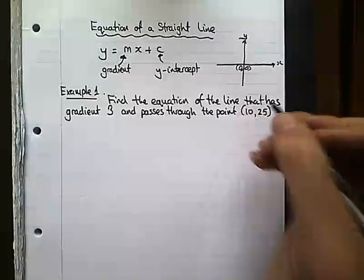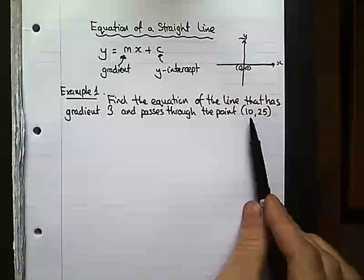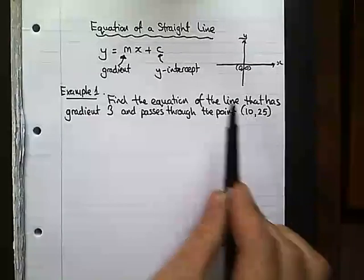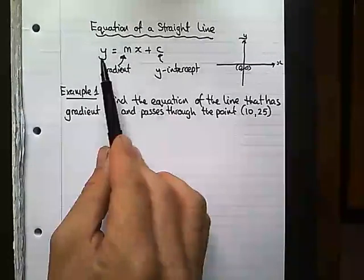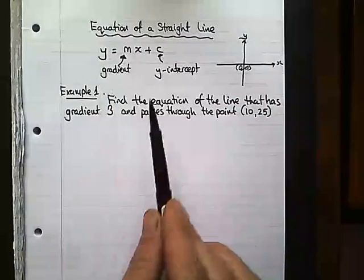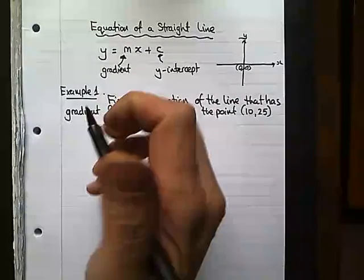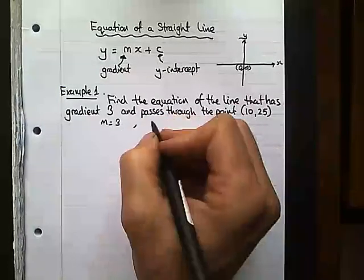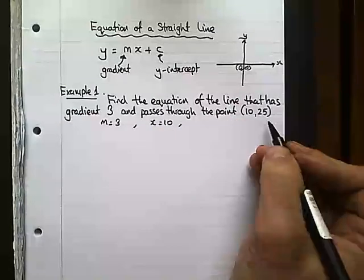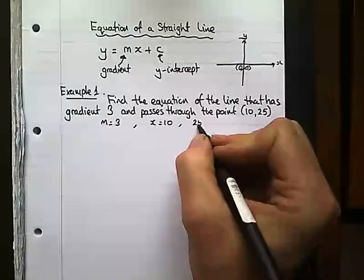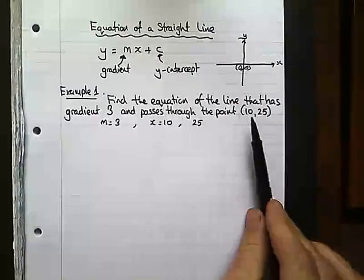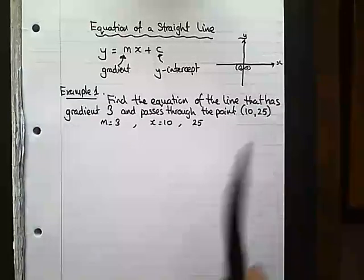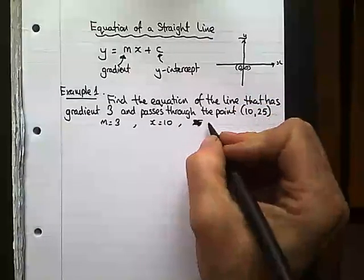What that's telling me is the x-coordinate is 10 at this point and the y-coordinate is 25. So if I were to substitute 10 into this equation, I should get 25 out as an answer. m equals 3, my x value equals 10, and my y value equals 25. Don't make the mistake of mixing up x and y values.